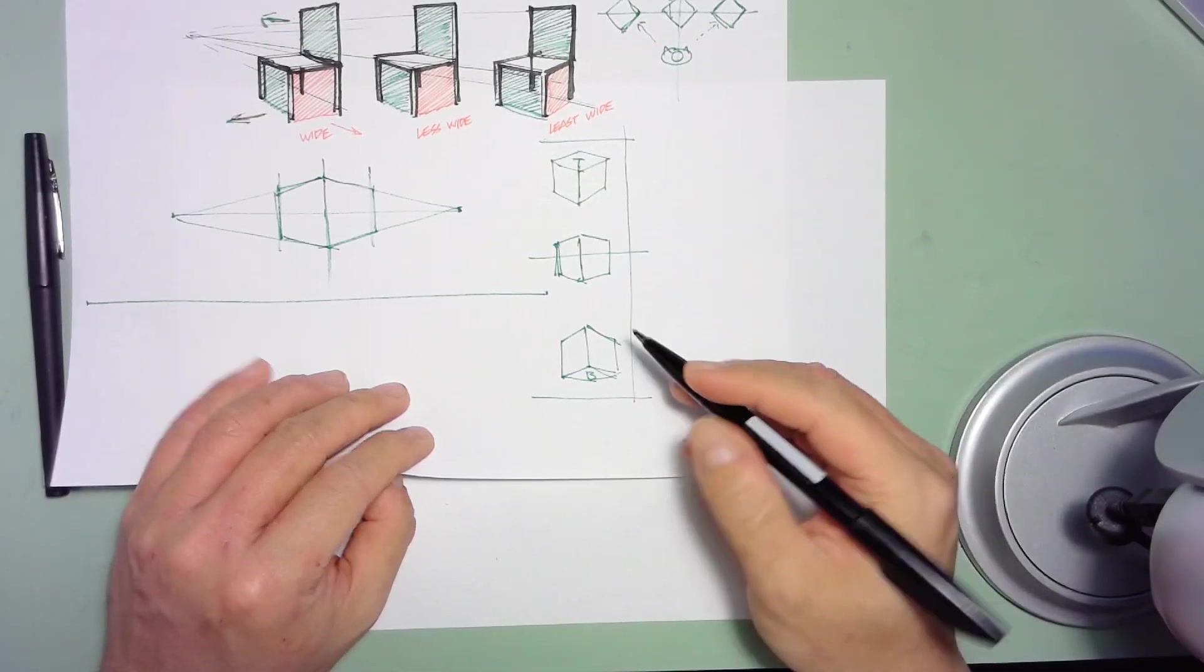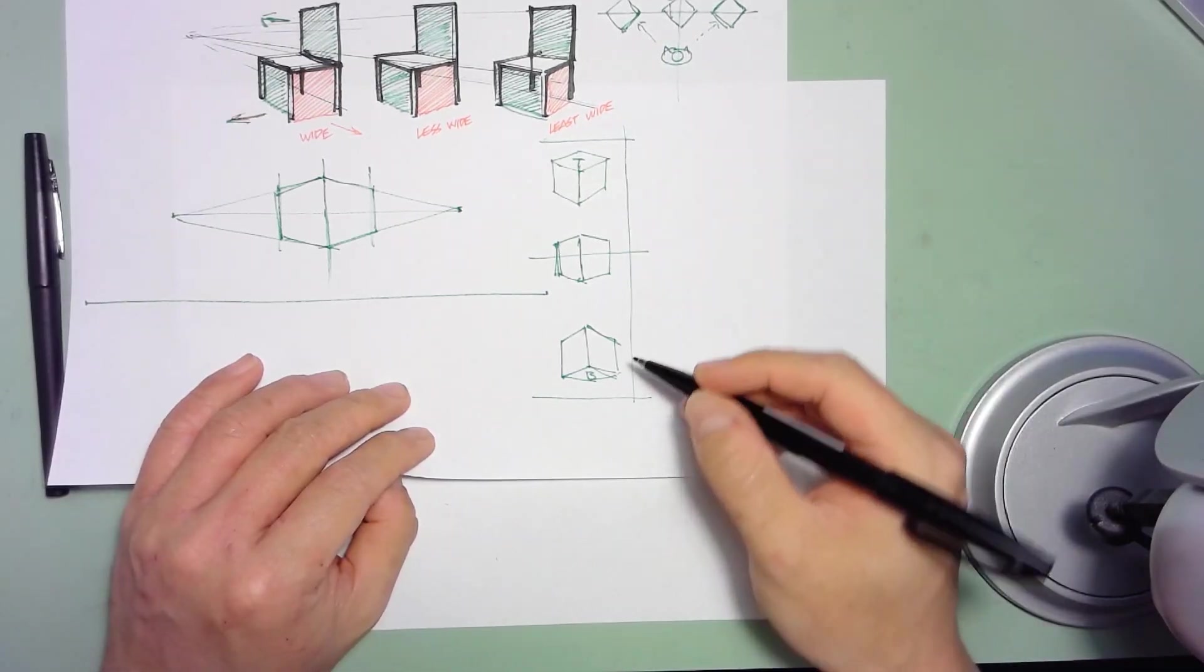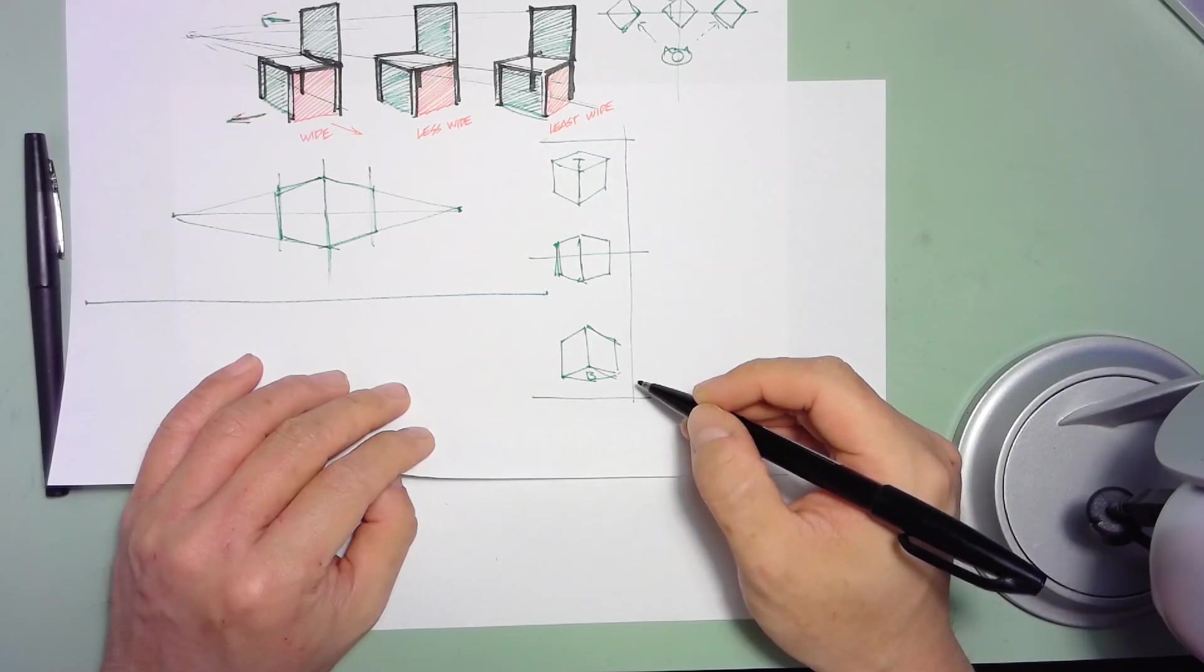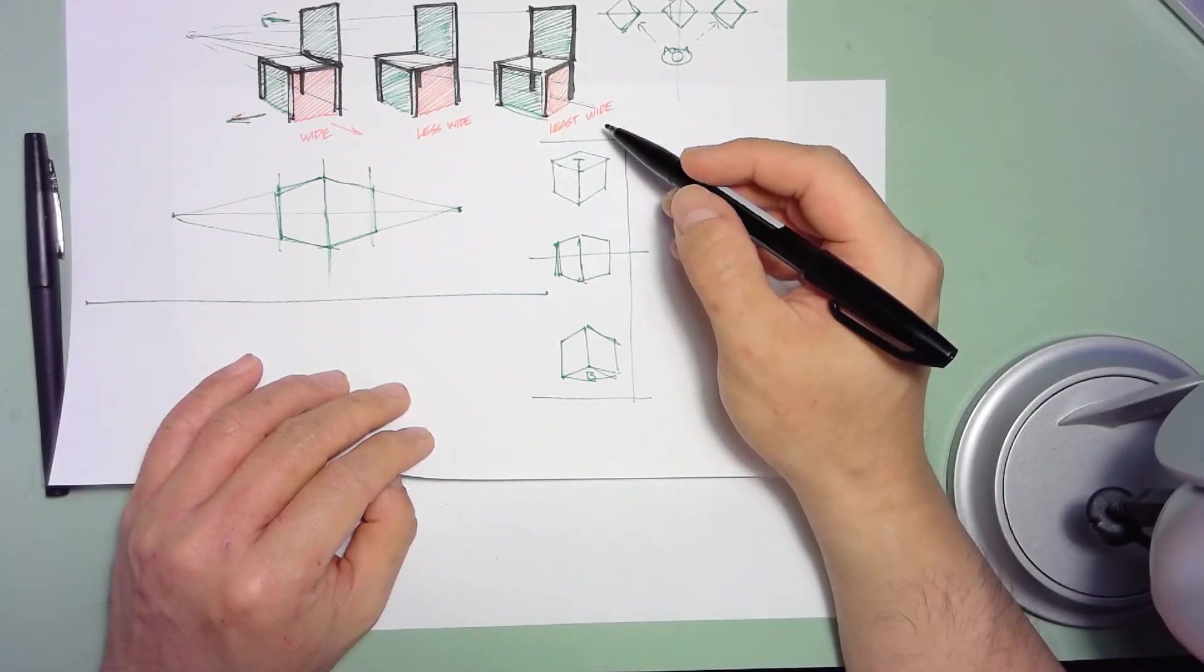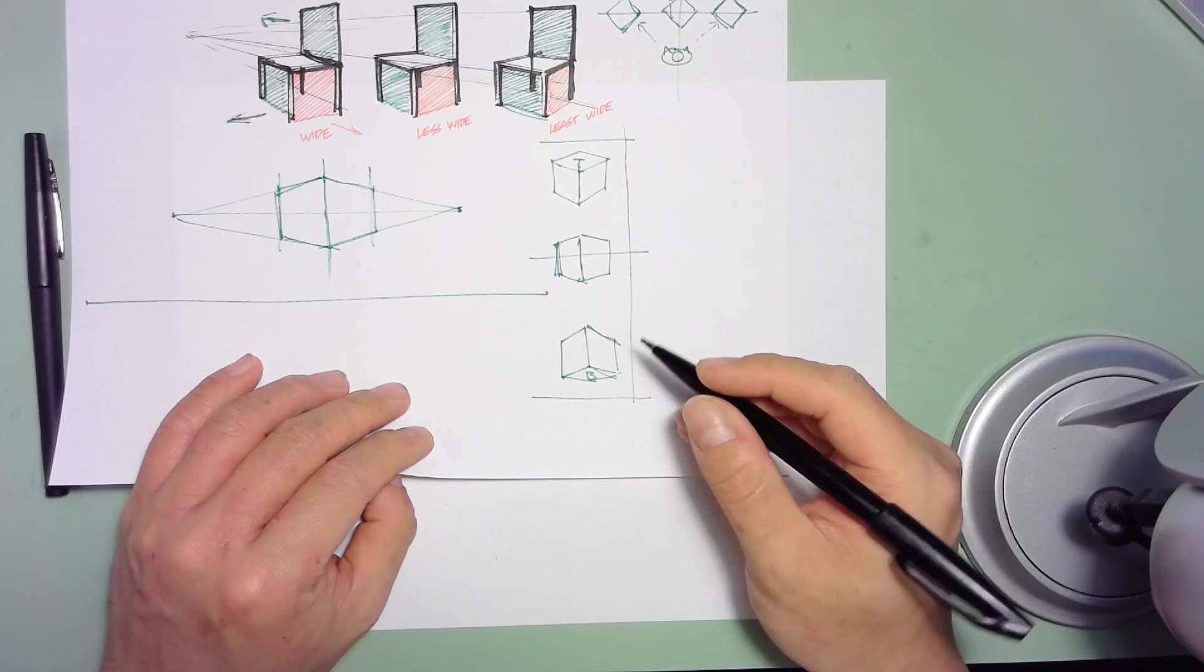Now, as you'll notice, that was a fairly vertically oriented type of viewing angle where we're just really going from top to bottom in a straight line.